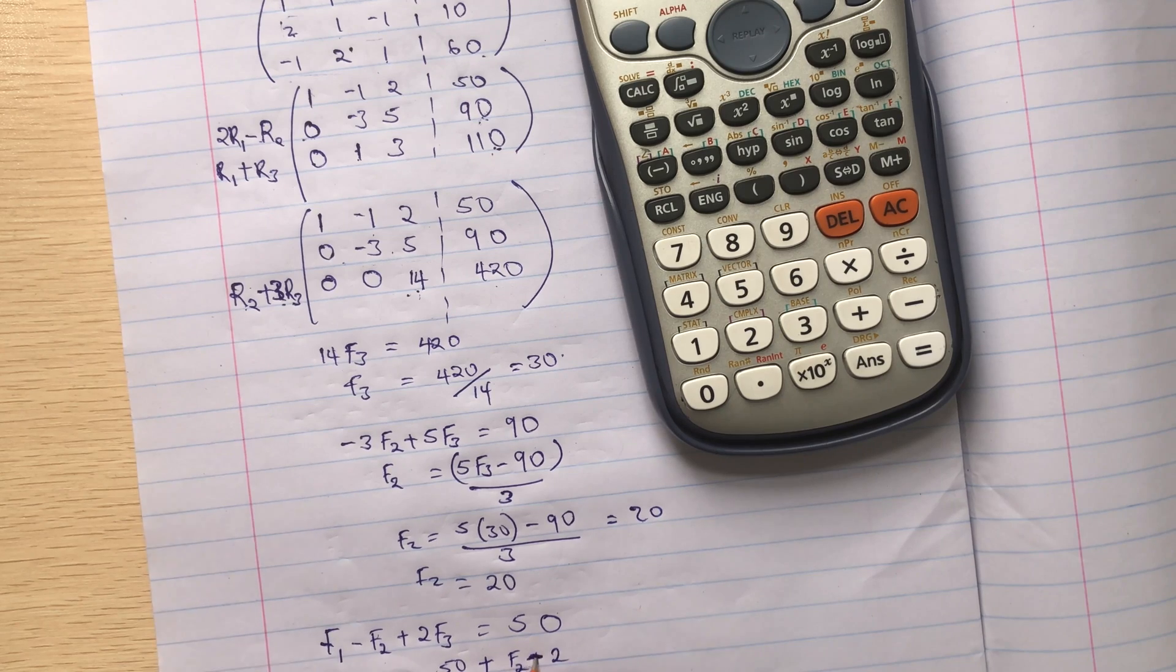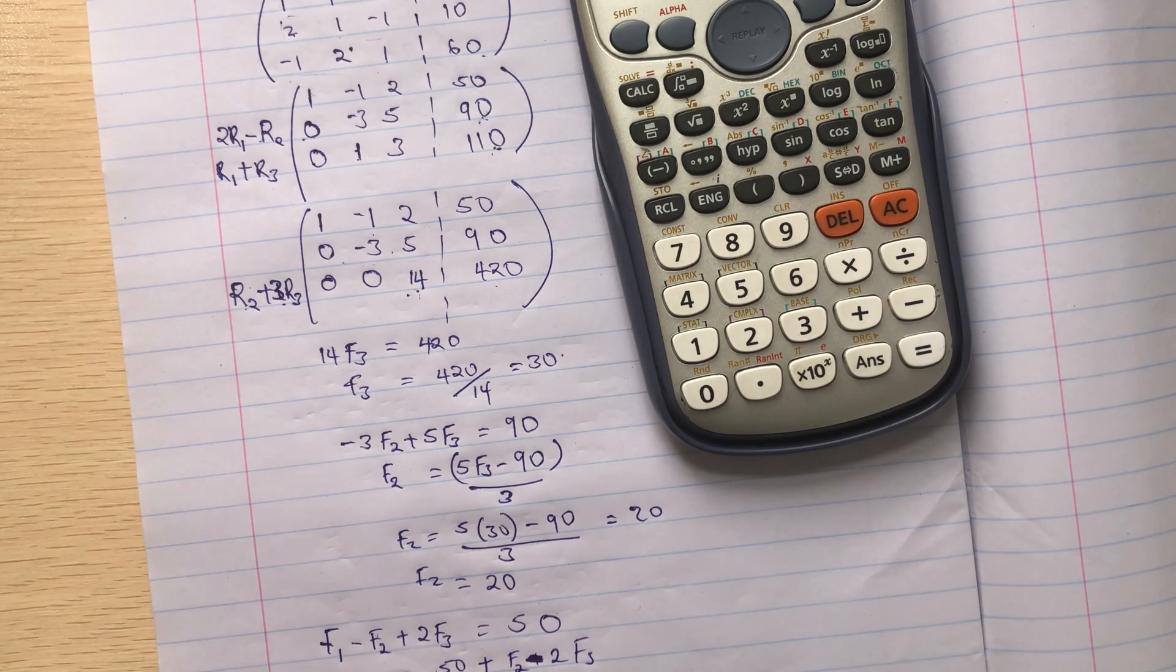So my F1 is equal to 50 plus F2 minus twice F3, which is 50 plus F2 is 20 minus twice into 30. So this is 70 minus 60, you'll get 10.